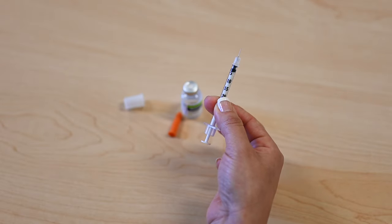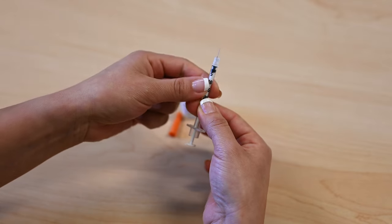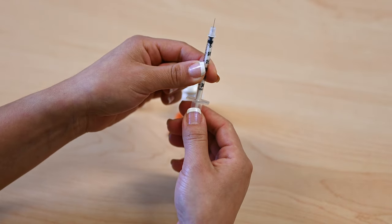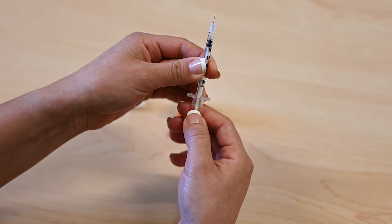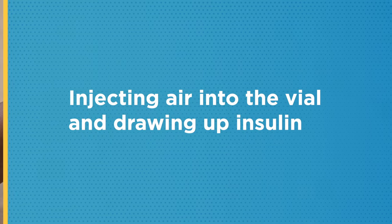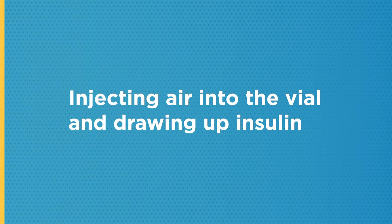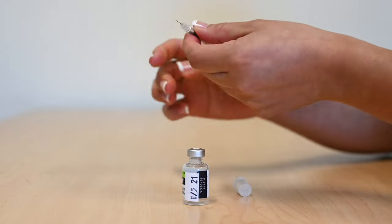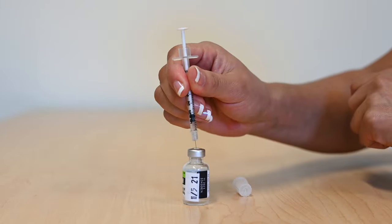Pull the plunger on the syringe back to the amount of your insulin dose. Put the syringe straight into the bottle and push the plunger down.